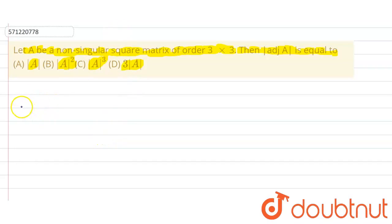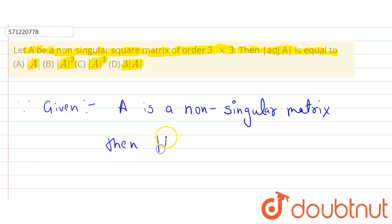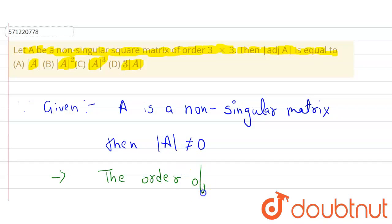So, first of all, let's write the given. Since it is given that A is a non-singular matrix, as we know, if a matrix is non-singular, then the determinant of A cannot equal zero. We have also been given that the order of matrix A is 3×3.